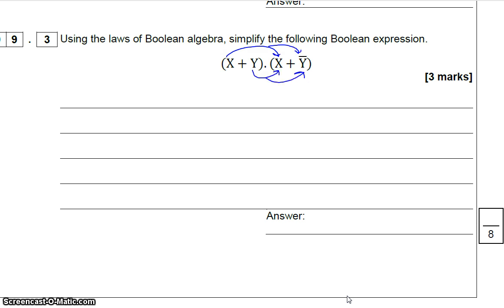Again, just like maths. So this becomes X and X, or X and not Y, or X and Y, or Y and not Y. X and X is just the same as X, and Y and not Y is the same as nothing. So we're taking it down to this stage.